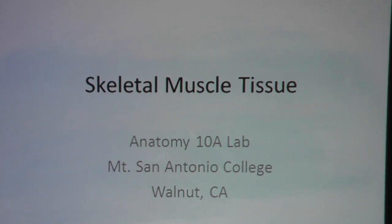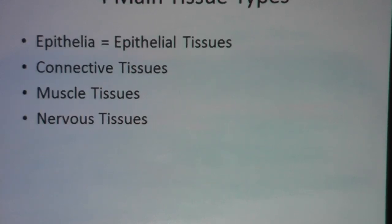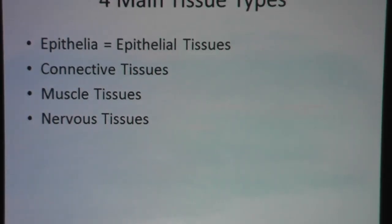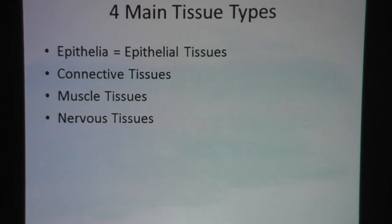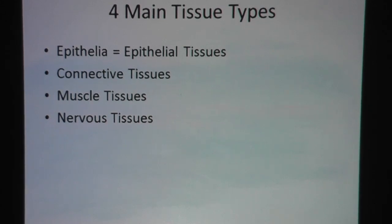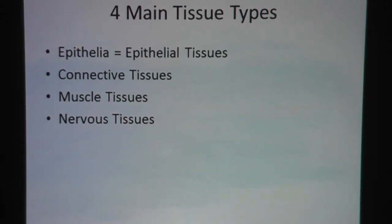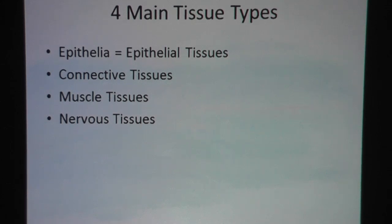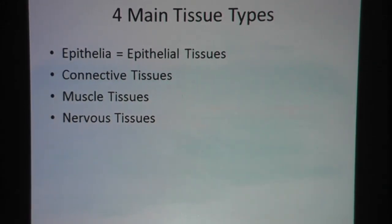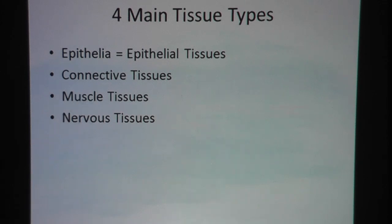Skeletal muscle tissue. This video is made from the Anatomy 10A lab at Mount San Antonio College. Let's review — there are four main tissue types in the human body: epithelial tissues, connective tissues, muscle tissues, and nervous tissue. Because we're talking about skeletal tissue, we're going to zoom in on muscle tissues.